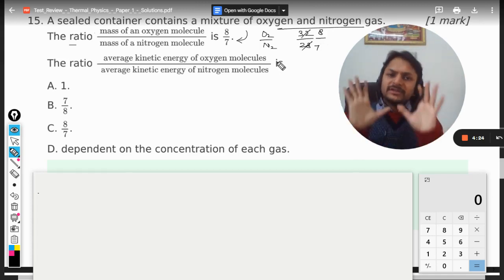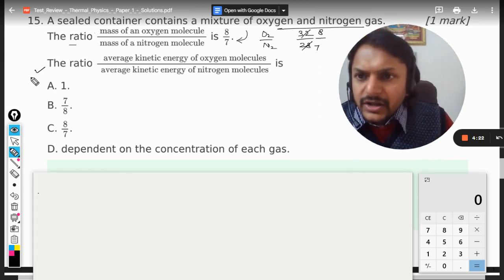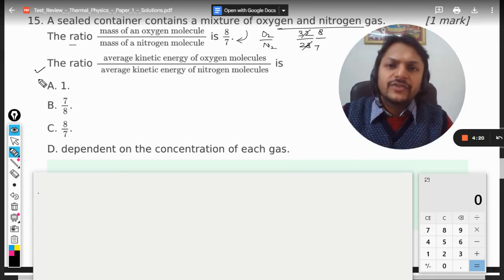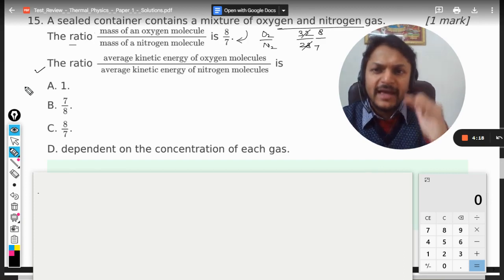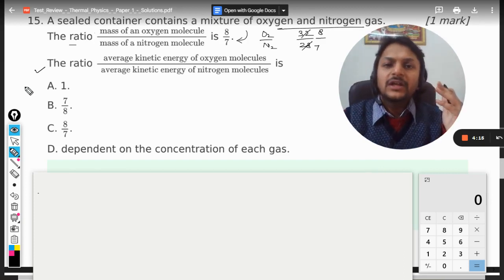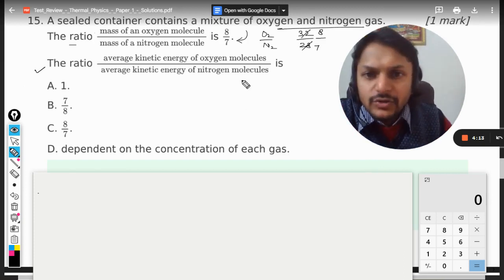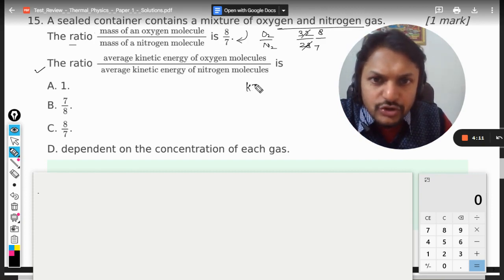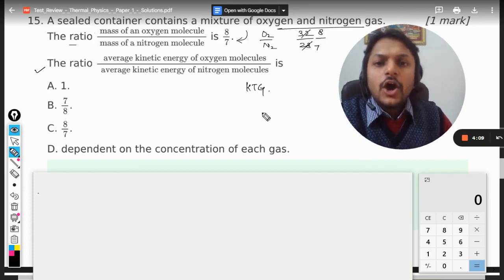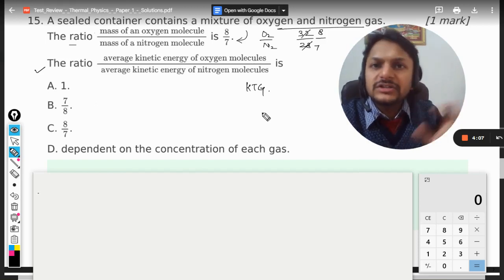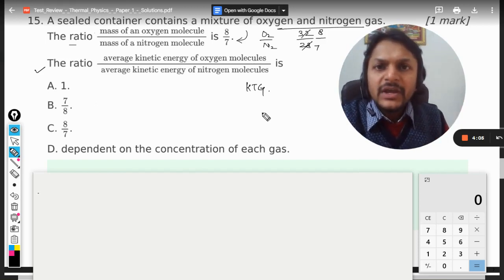The ratio average kinetic energy of oxygen molecule divided by average kinetic energy of nitrogen molecule is—well, according to the postulates of kinetic theory of gases, all the gases, like whether it is oxygen, nitrogen, neon, or whatever, they are considered to be ideal gas.